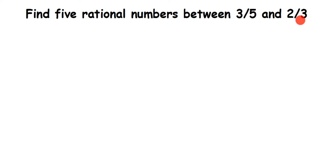Whenever they ask you to find rational numbers between two rational numbers, the first step is to check the denominators — the denominators have to be the same. Here we have denominators 5 and 3, which are not the same, so the first step is to take the LCM and make them equal. The LCM of 5 and 3 is 15.